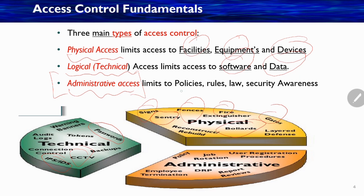Administrative access limits access through policies, rules, law, security awareness, and job rotation. Examples here include DRP — data recovery plan — report reviews, policy, job rotation, user registration procedures, and employee termination.